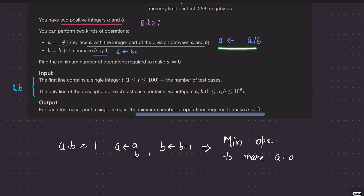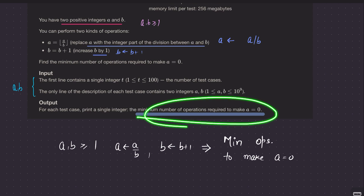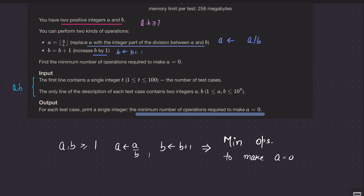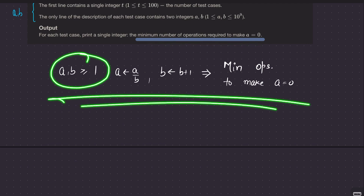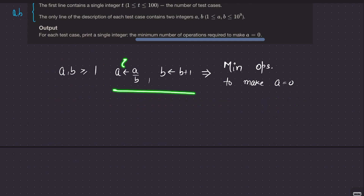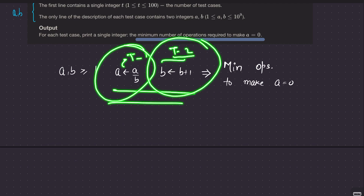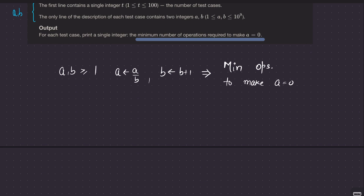Operation type 1: set a = floor(a / b). Operation type 2: increment b by 1, so b = b + 1. What we want to find is the minimum number of operations required to make a equal to 0. So type 1 is divide and type 2 is add — we want the minimum total of type 1 plus type 2 operations to make a = 0.